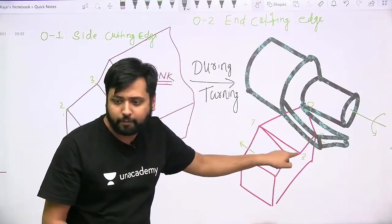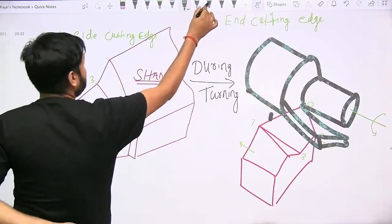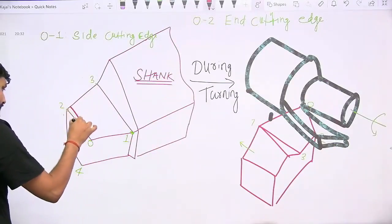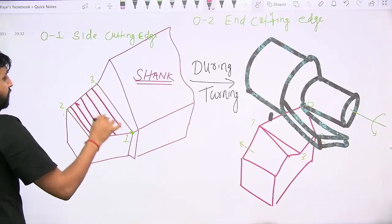The surface is between these points 01, 02, and 4. This surface upon which the chip is flowing is what we call the rake face of the tool, or simply the face of the tool.